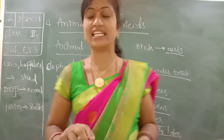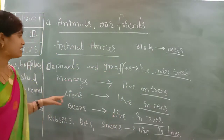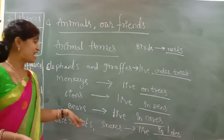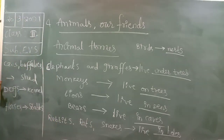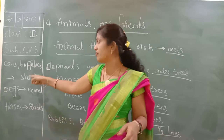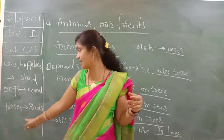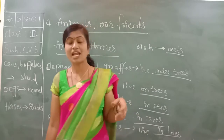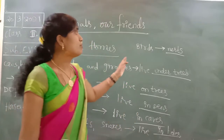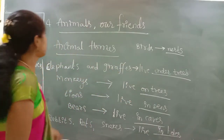Once again listen carefully: elephants and giraffes live under trees, monkeys live on trees, lions live in dens, bears live in caves, rabbits, rats, and snakes live in holes. Human beings make homes for domestic animals - cows and buffaloes in sheds, dogs in kennels, horses in stables. Some birds build nests on trees. This is about animal homes.